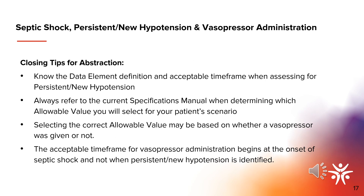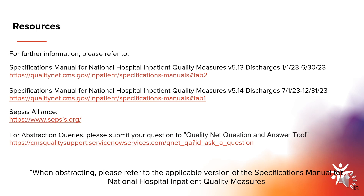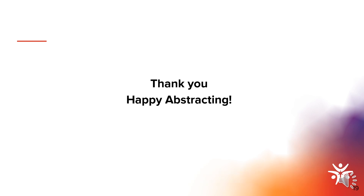Just a few closing tips for abstraction. Know the data element definition and acceptable time frame when assessing for persistent or new hypotension. Always refer to the current specifications manual when determining which allowable value you will select for your patient's scenario. Selecting the correct allowable value may be based on whether a vasopressor was given or not. The acceptable time frame for vasopressor administration begins at the onset of septic shock and not when persistent or new hypotension is identified. Please refer to the resources listed for further information. This concludes our presentation today, and I would like to thank you very much for attending. Happy abstracting.